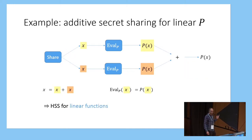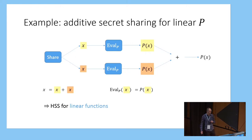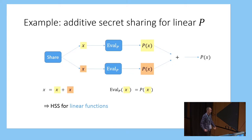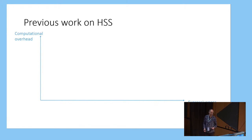A simple example of homomorphic secret sharing: you can just take standard additive secret sharing over some finite field, where the share algorithm will simply sample two random shares which sum up to the secret. Then to evaluate any linear program P, we can simply apply P to the shares individually, and then these will sum up to give the correct result P of X. But if we want homomorphic secret sharing for more complex functionalities, then we're going to have to work a lot harder.